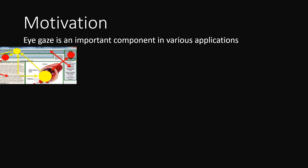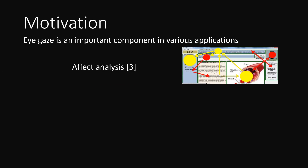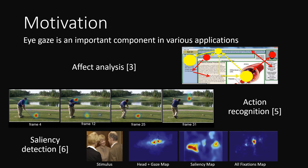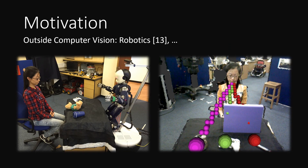Eye gaze is an important component in various applications. Examples in computer vision are affect analysis, action recognition, and saliency detection. There are also many applications outside computer vision, for example in robotics.